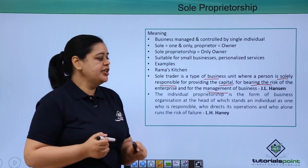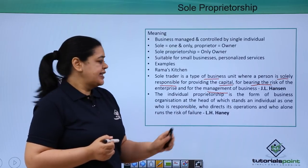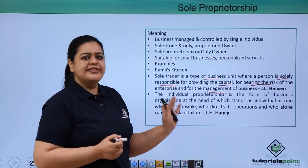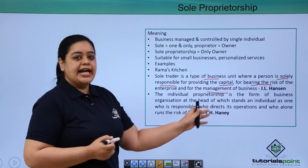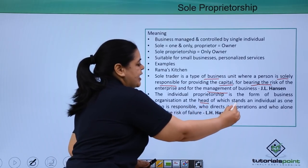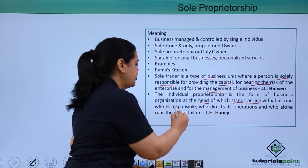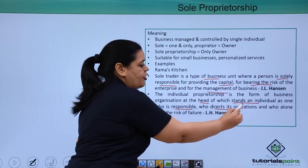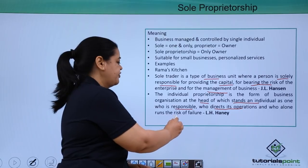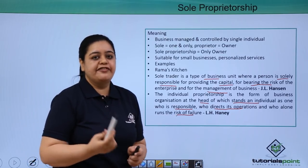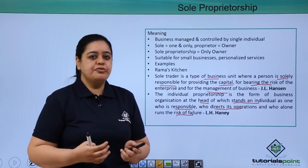There is a second definition by L.H. Haney. It says that individual proprietorship — that is, sole proprietorship — is a form of business organization at whose head stands an individual who is responsible, who directs its operations, and who alone runs the risk of failure. Remember the key words: responsible, directs, and risk of failure. This is how definitions need to be remembered for examination purposes.